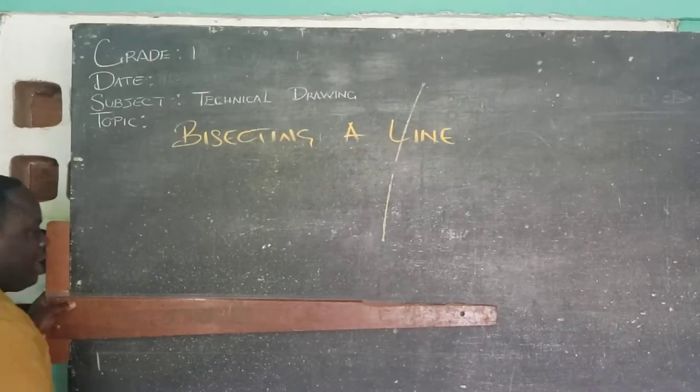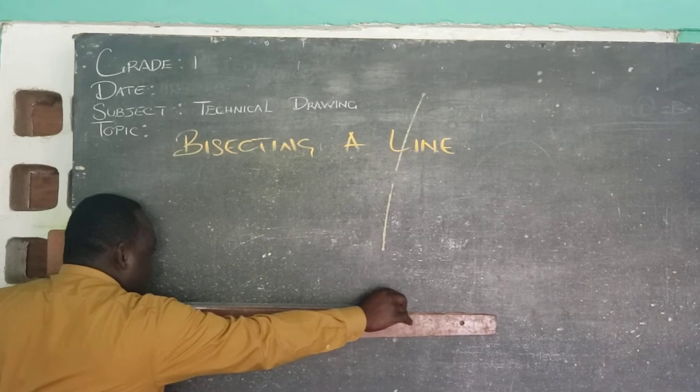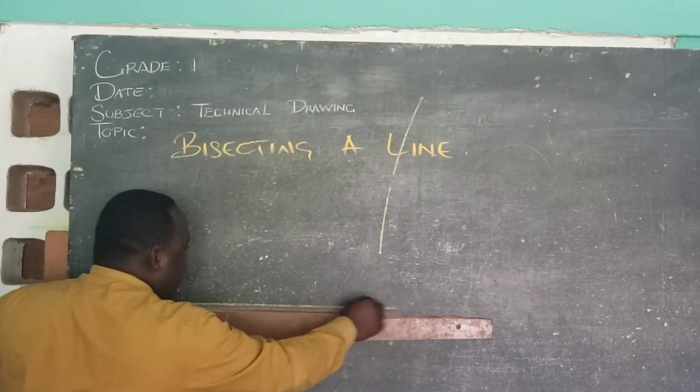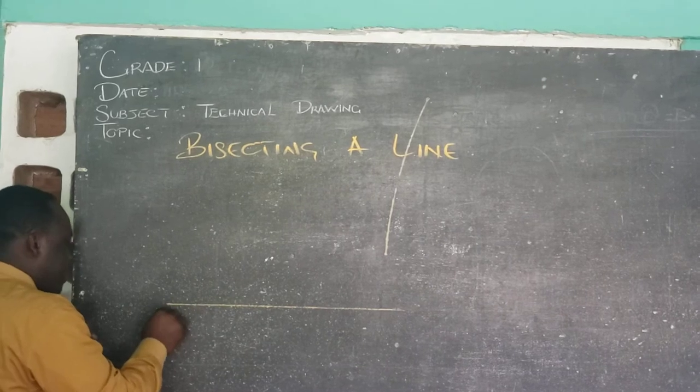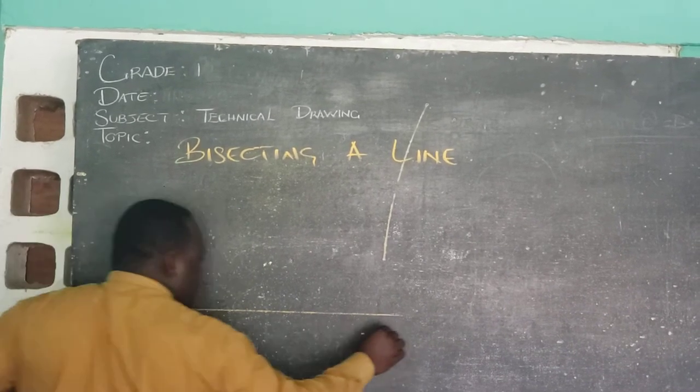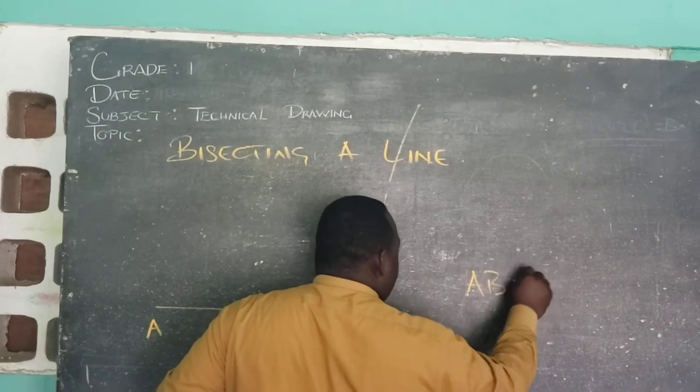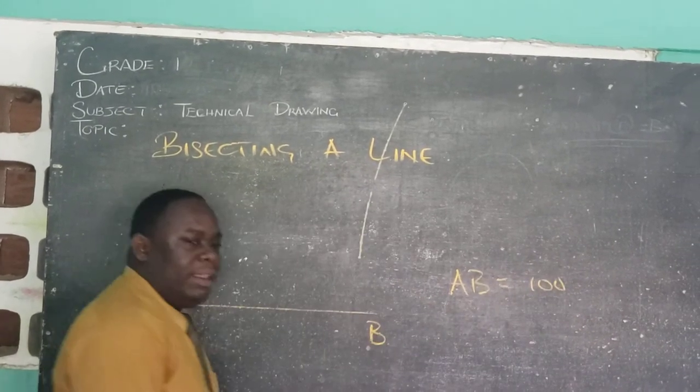Now in order to bisect a line, then we need our given line. And let us say that our line AB. So AB is equal to 100 mm.